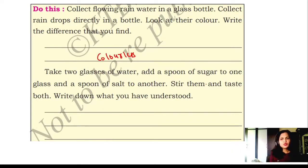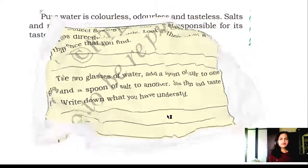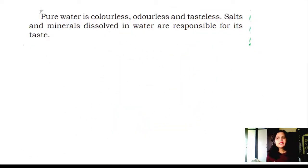Take two glasses of water. Add two spoons full of sugar to one glass and a spoon of salt to another. Stir them and taste both. Write down what you have understood. Sweet taste will come after adding sugar to it. Salty taste will come after adding salt to the glass of water. Pure water is colorless, odorless, and tasteless. Salts and minerals dissolved in water are responsible for its taste.